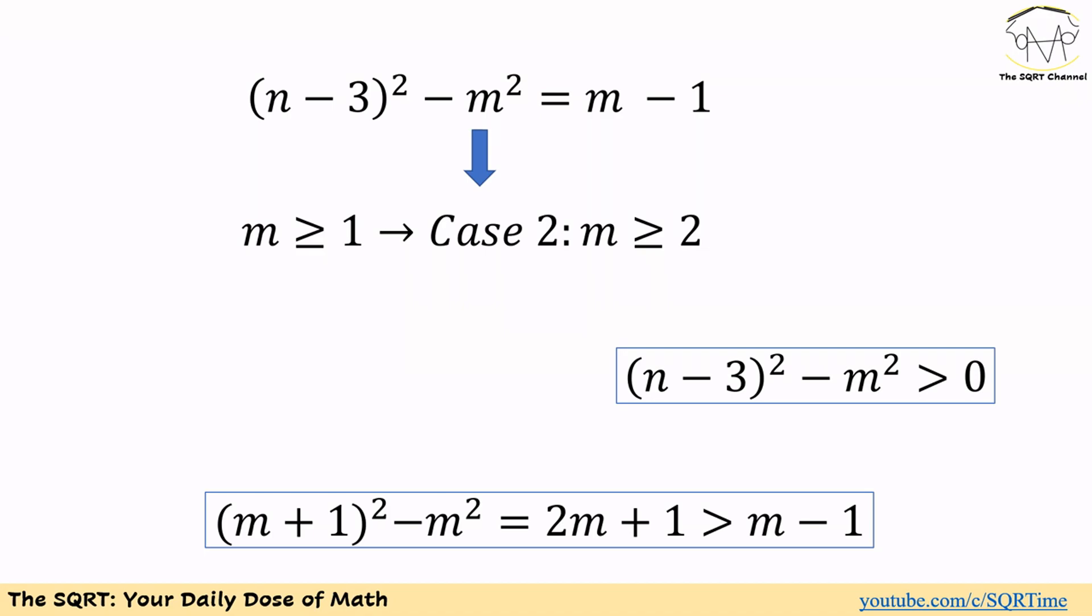Since m is a positive integer, we will have 2m plus 1 is greater than m minus 1. So for the minimum possible value that we can have for n minus 3 which is m plus 1, the difference between n minus 3 squared and m squared is going to be larger than m minus 1. So we cannot find any possible value for n minus 3 if m is at least 2.